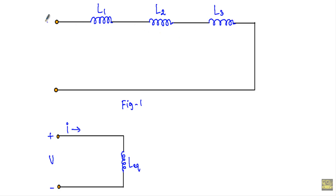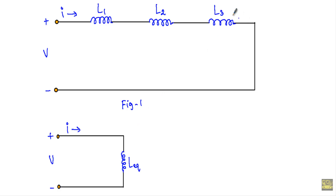Let's say I am applying a voltage V between the terminals. As a result we get a current I flowing in this circuit, and applying the same voltage between the terminals of figure 2, the same current will be flowing. Since we get the same voltage and current, this circuit is the equivalent circuit of the inductive circuit. This is a total series circuit, so the current I will be the same all over the circuit.